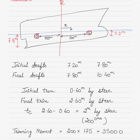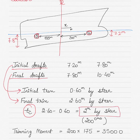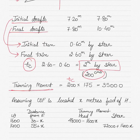From the initial drafts, the initial trim is 0.6 meters by stern. The final trim is 2.6 meters by stern, meaning there was a change in trim of 2.6 minus 0.6 equals 2 meters by stern, or 200 centimeters. Therefore the trimming moment is 200 centimeters multiplied by MCTC of 175, giving a trimming moment of 35,000 ton-meters.